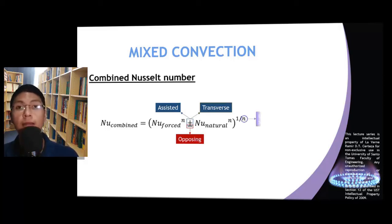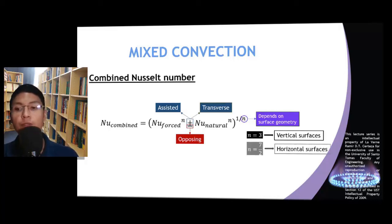On the other hand, the value of n depends on the surface geometry. n is equal to 3 when the surfaces are oriented vertically, while it is equal to 7 halves when the surfaces are oriented horizontally.